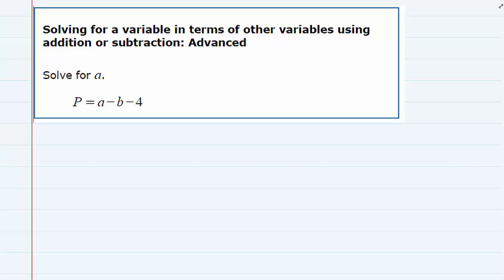Here we're being asked to solve for a, so we just need to get this a by itself. Since it's on the right-hand side, we'll move those other two terms over to the left-hand side. The a currently has a minus b term there with it, and a minus 4 term as well.